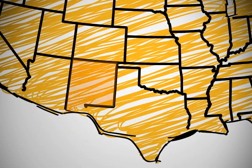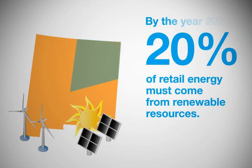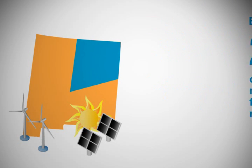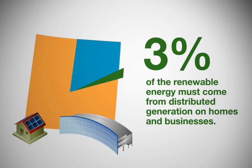The State of New Mexico has introduced an aggressive renewable energy standard that will require electricity providers to produce 20% of retail energy needs from renewable resources by the year 2020. A further requirement of this law is that 3% of the renewable energy must come from distributed generation, such as solar panels on homes and businesses.